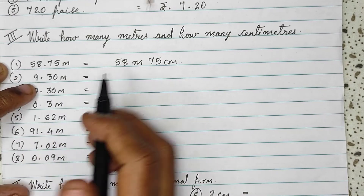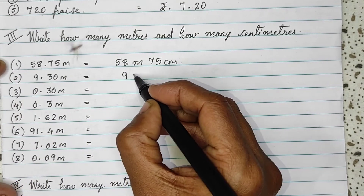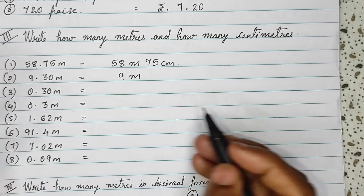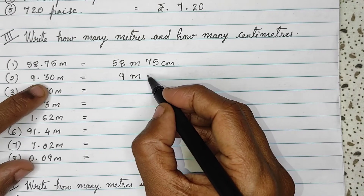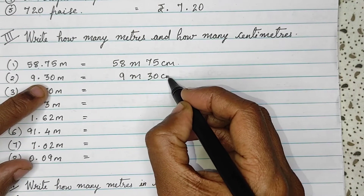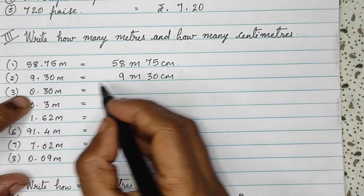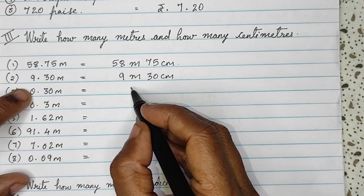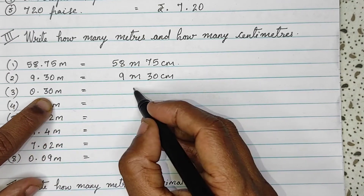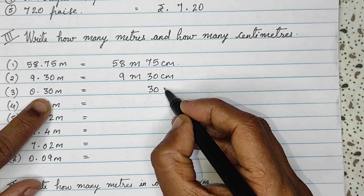9.30 — that means 9 meters and 30 centimeters. Then 0.30 — 0 has no value, so directly 30 centimeters.